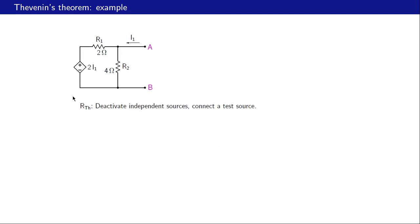Now let us find the Thevenin resistance. To do that we deactivate the independent sources in the original circuit — in this case there are no independent sources, so nothing needs to be done. Because we have a dependent source, we cannot directly figure out the equivalent resistance as seen from a-b. Therefore let us use another method: connect a test source and find the ratio of the test voltage to the test current, which gives us r-th.